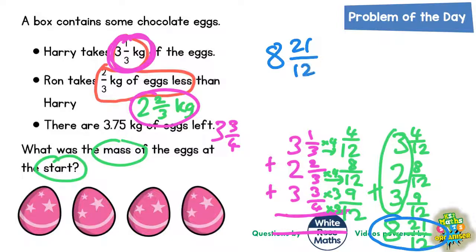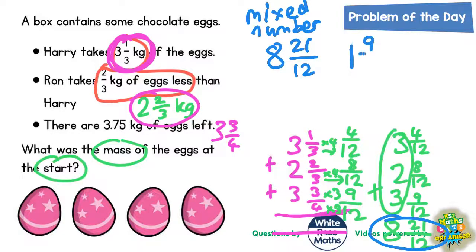When you write a mixed number, we've actually got an improper fraction within the mixed number, and that is not allowed. 21 over 12 is an improper fraction — you can't have an improper fraction as part of a mixed number when there's a whole number in front of it. We need to turn this improper fraction into a mixed number by itself. 21 divided by 12 — how many 12s in 21? One lot of 12 goes into 21 with 9 left over, so it's 1 remainder 9, which is 1 and 9 twelfths. So we've got 8 whole ones, and the 21 twelfths is an extra 1 and 9 twelfths.